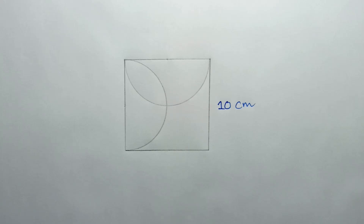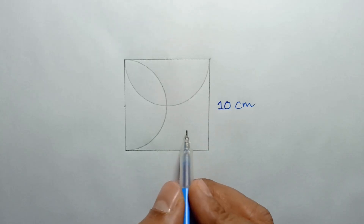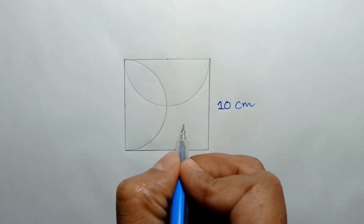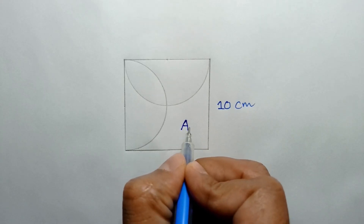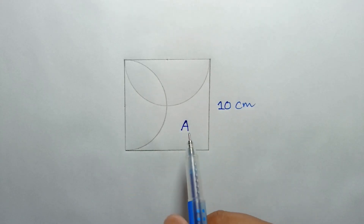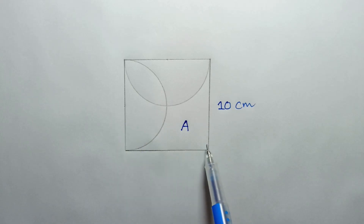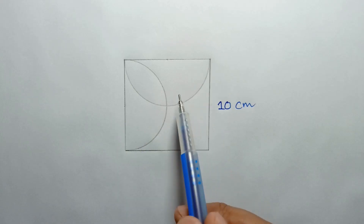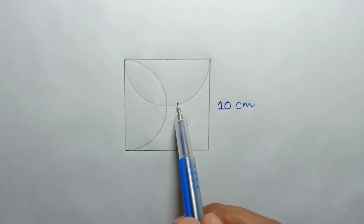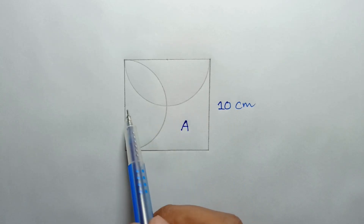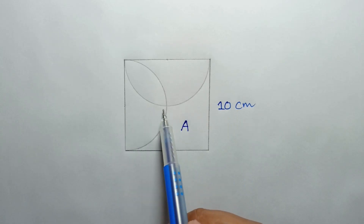Hi everyone. In this video I am going to show how to find the area of this region. Let's consider the area of this region is A square centimeters. This is a square of sides 10 centimeters, and these are the two half circles of radius 5 centimeters.